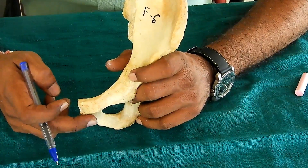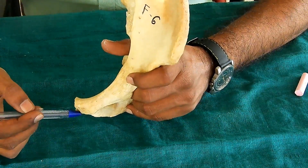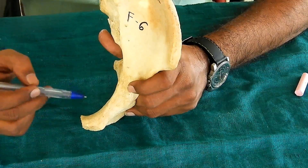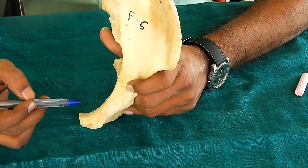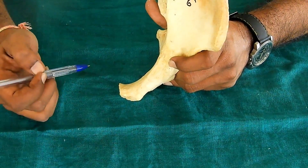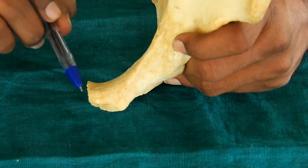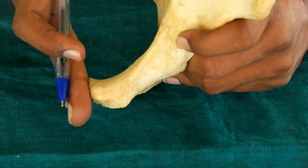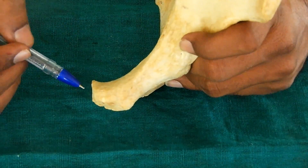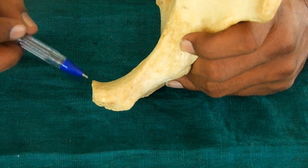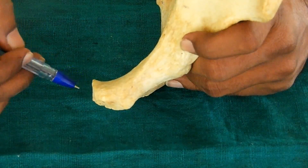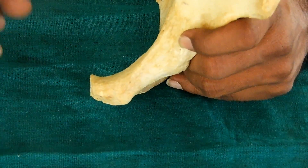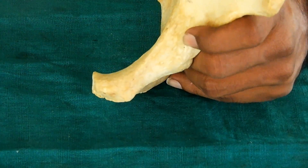The anterior surface is facing downward, forward, and slightly laterally. The pelvic surface is facing upwards, backwards, and slightly medially. The symphysial or medial surface lies in the midline and it will unite with the same surface of the opposite bone to form a joint which is known as the pubic symphysis, which is a secondary cartilaginous joint.